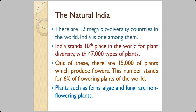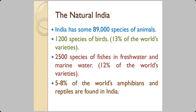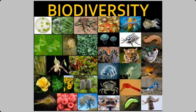We have some 47,000 types of plants, some flowering and some non-flowering. We have some 89,000 species of animals — a good variety of birds, fishes, and amphibians put together. Everything is known as biodiversity, and human beings are also one part of it. Directly or indirectly, human beings benefit from that.